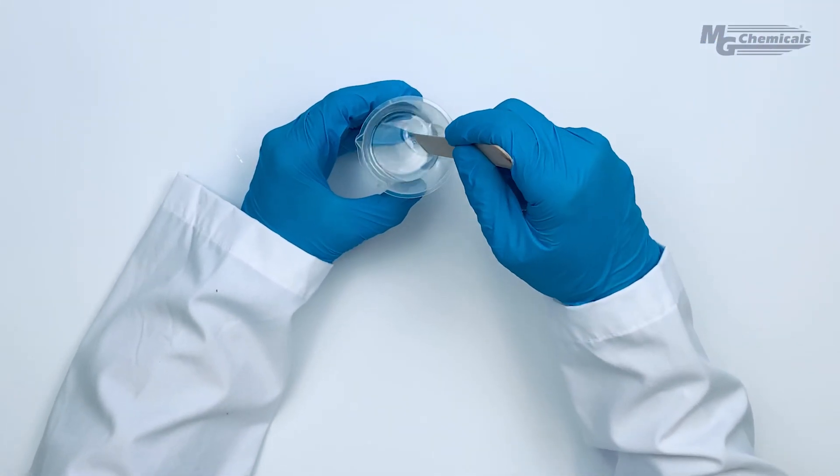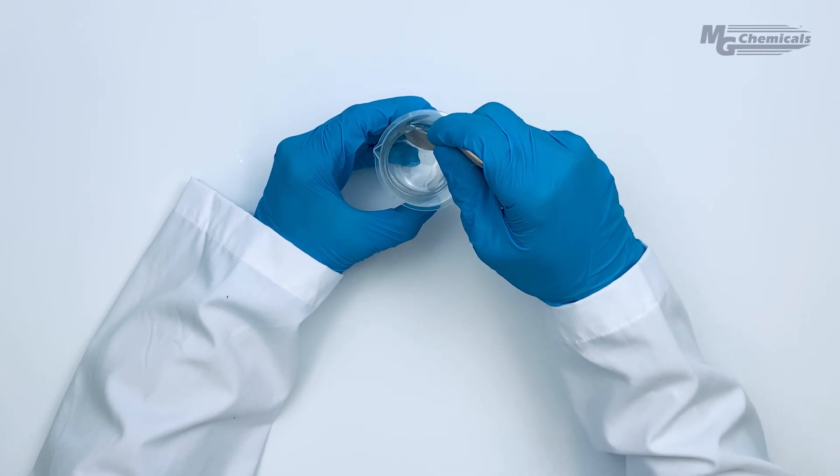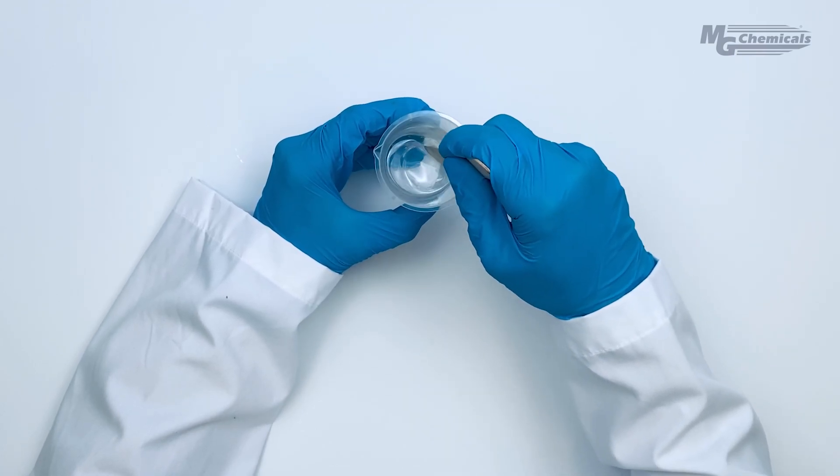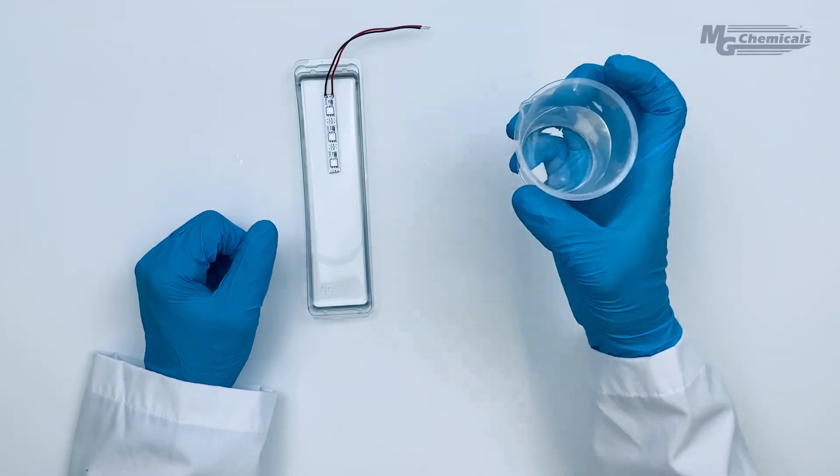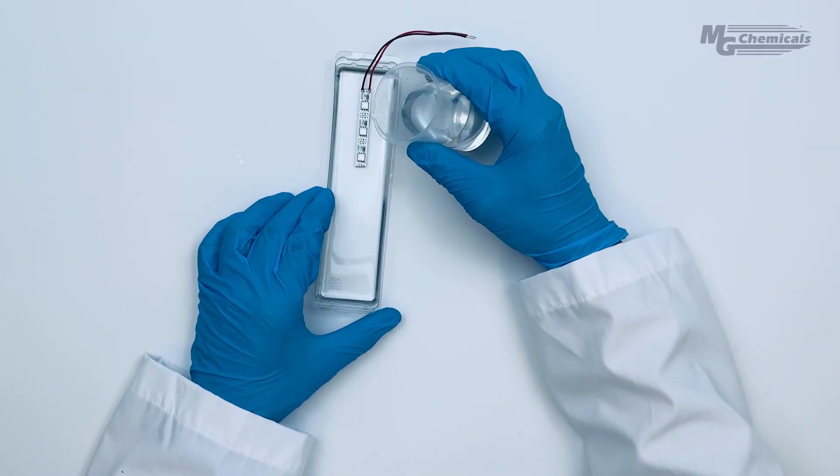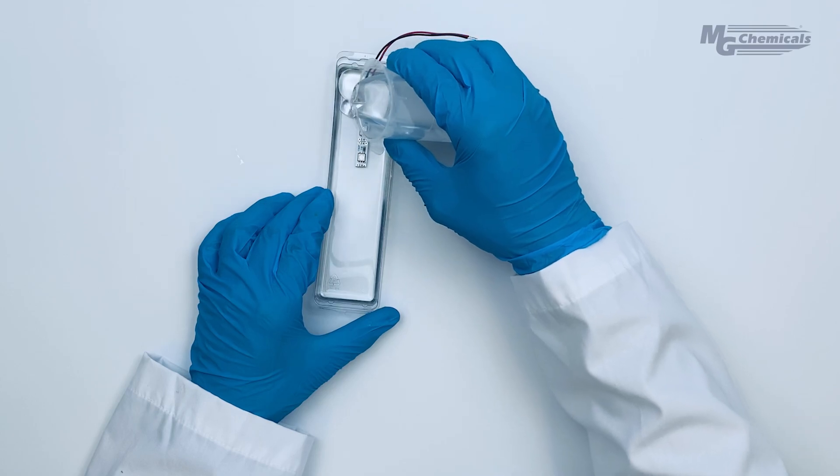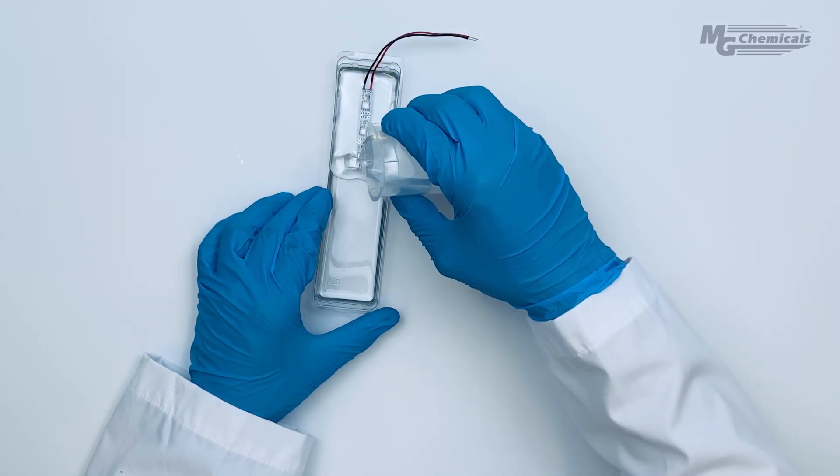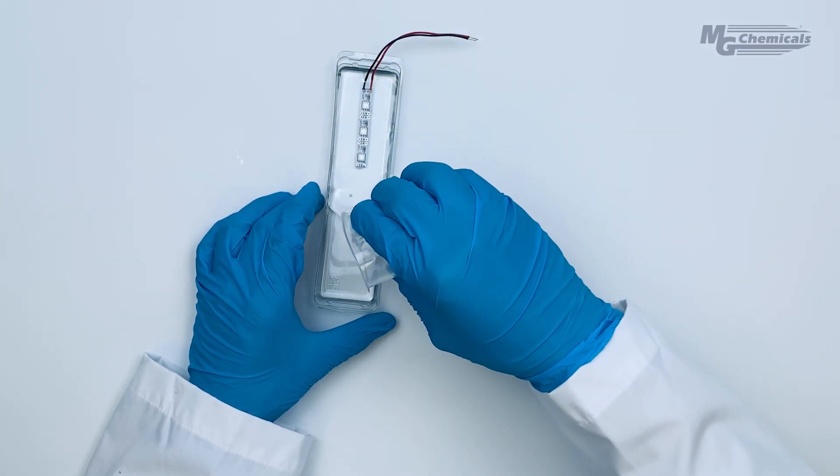Thoroughly mix the two components together to ensure the mixture is completely homogeneous and full cure is achieved. This process introduces air into the mixture. For best results we recommend using a vacuum after stirring to remove air and achieve a bubble free finish.